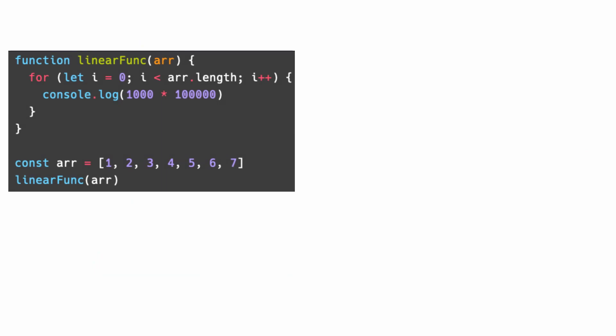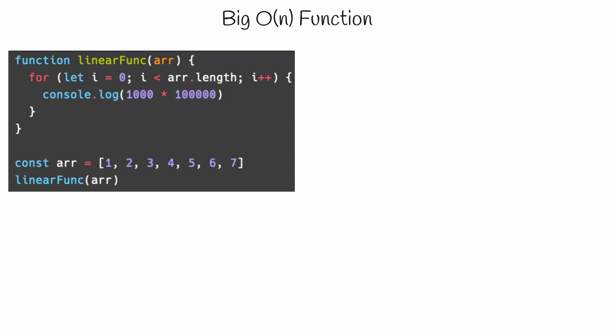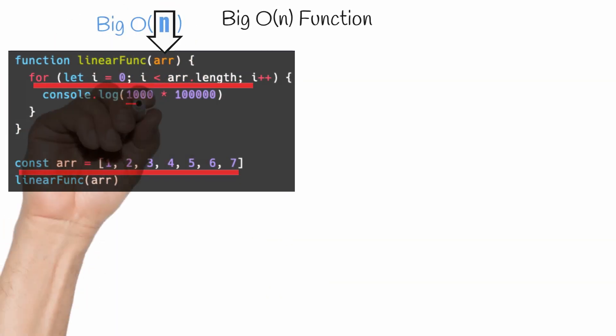So this function is in the same linear category as our dentist's. Let's step through it and find out why. To start, the input to our function is an array with seven items inside of it. For each of those items, we will log this expression which multiplies 1000 times 100,000.